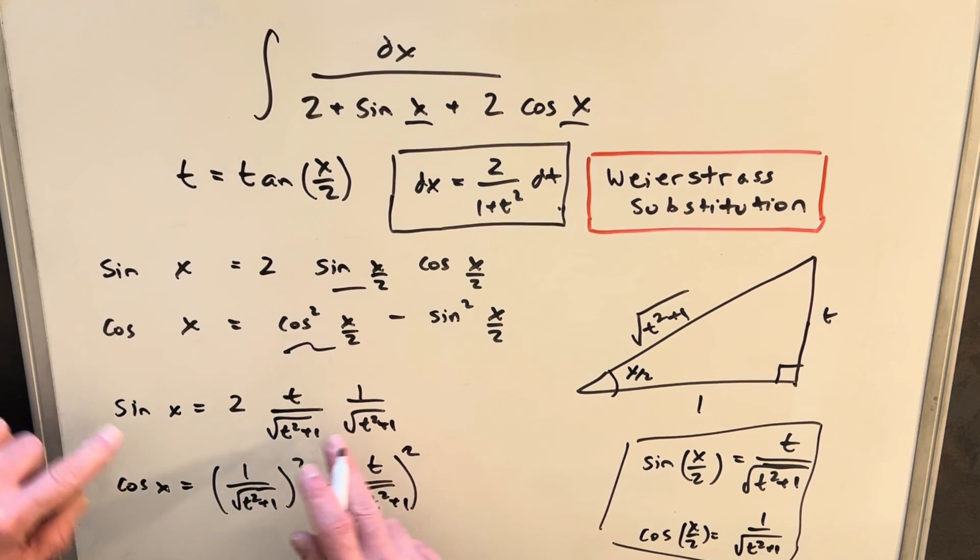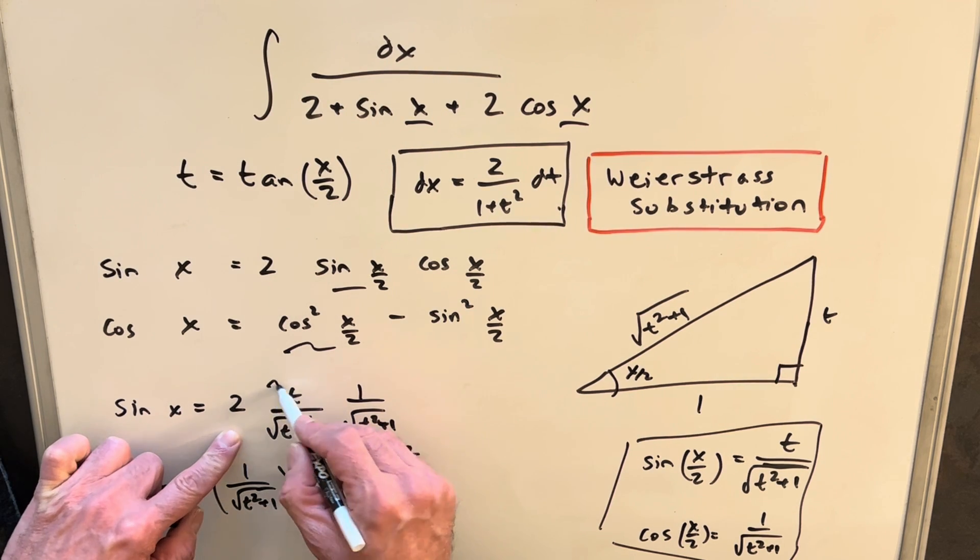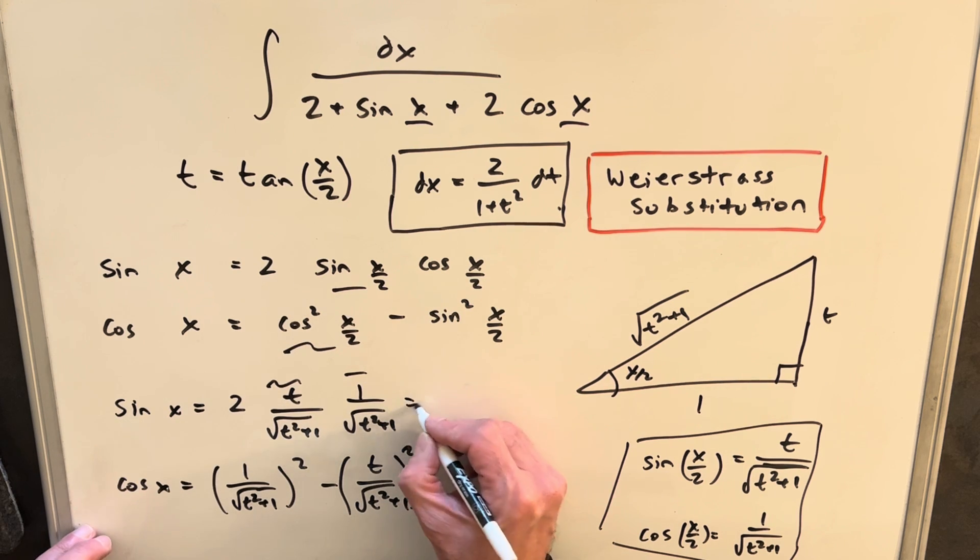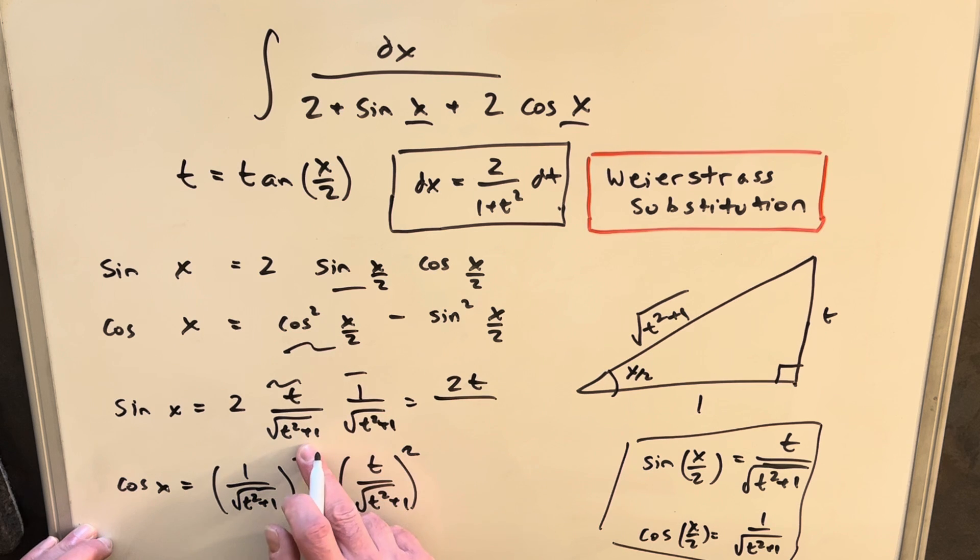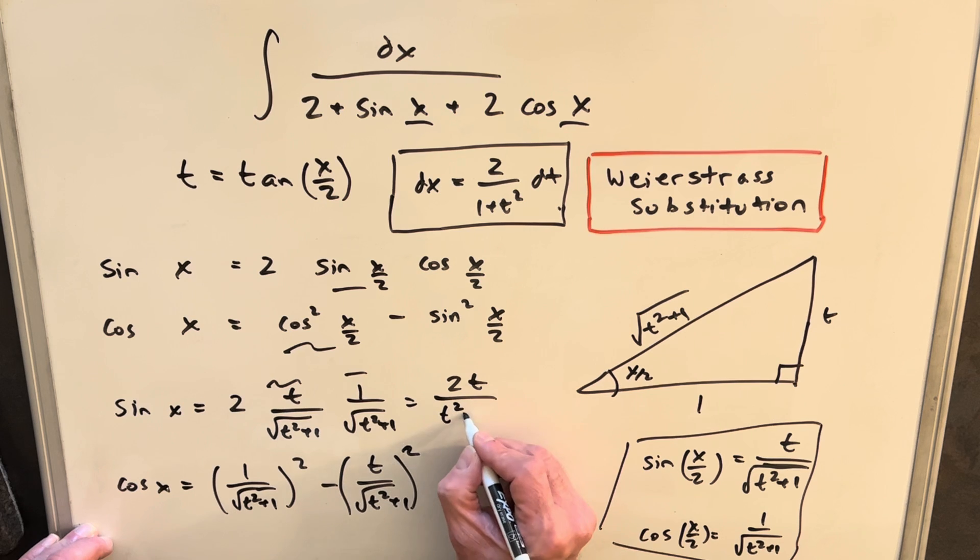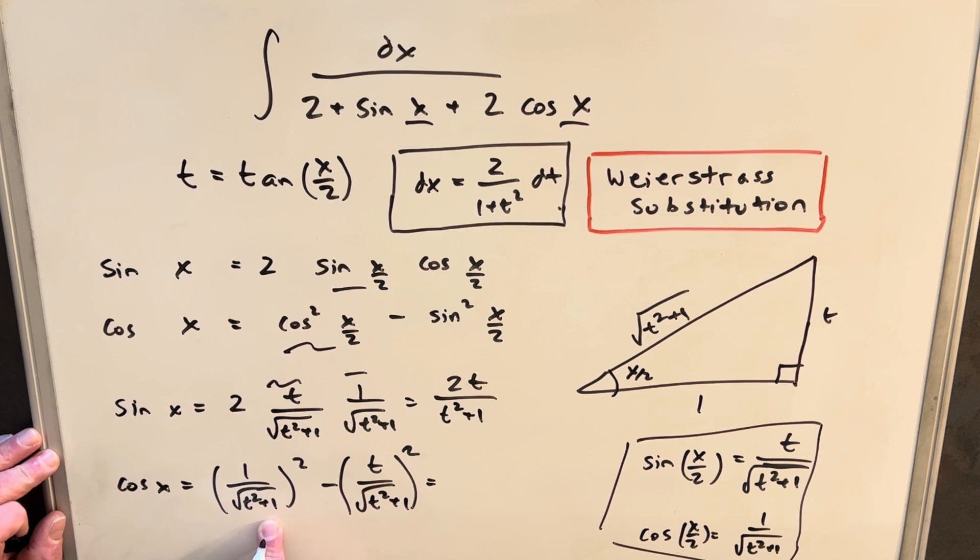Okay, so look at our sine of x formula. I filled in my values here for sine x over 2, cosine x over 2. So now we just multiply that across, and we're going to have for sine x, 2t over t squared plus 1. Then for cosine x, when we square it, we're going to eliminate the square root in the denominator. So when we put this all together, we're going to have 1 minus t squared over 1 plus t squared.